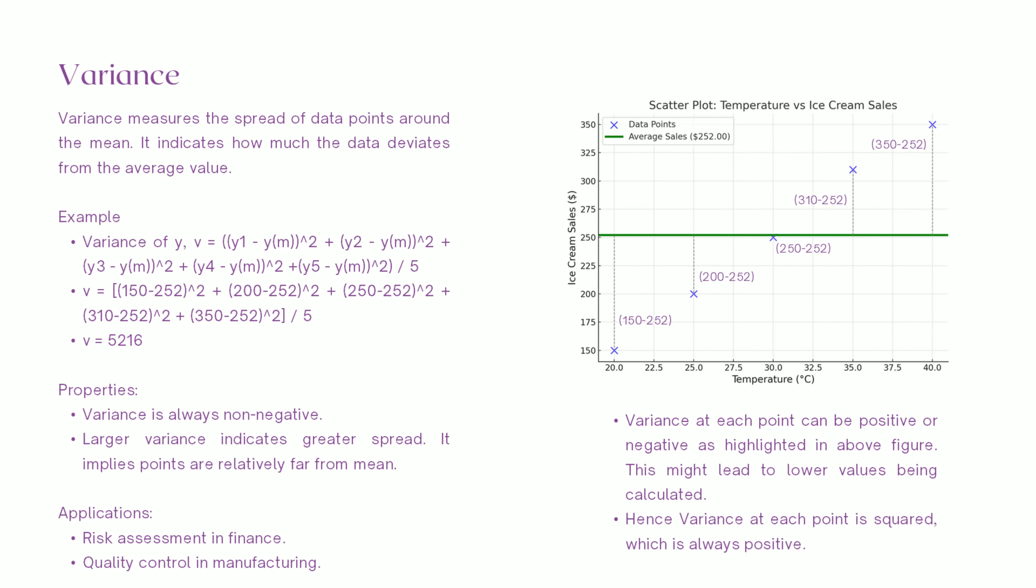For our example, V equals 5216. What does this number mean? It shows that the data points are spread out around the mean. Why does this matter? A small variance indicates the data points are close to the mean, which implies consistency. A large variance means the data is widely spread, which might suggest variability or uncertainty.